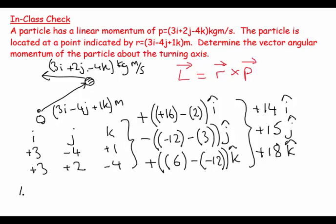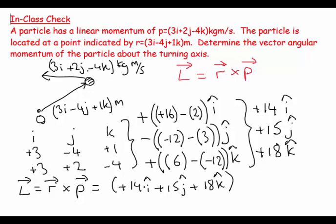So then I say my L, which equals vector r crossed with vector p, equals plus 14i, plus 15j, plus 18k. And the units—it is angular momentum, which is going to be kilogram meters squared per second. Momentum is mass times velocity multiplied by distance. I look at my equation to get my units if I can't remember them.